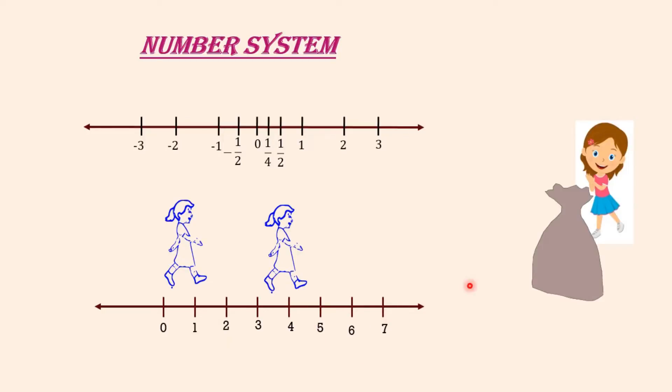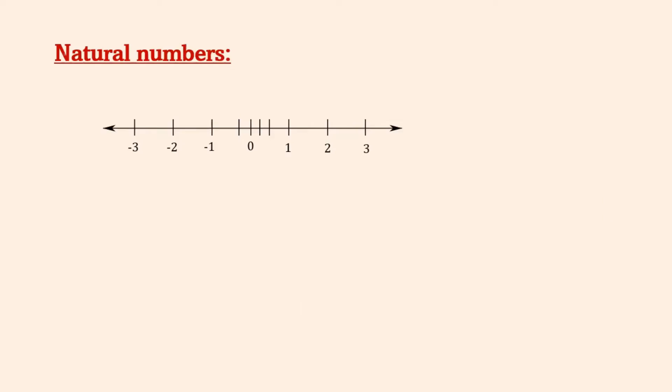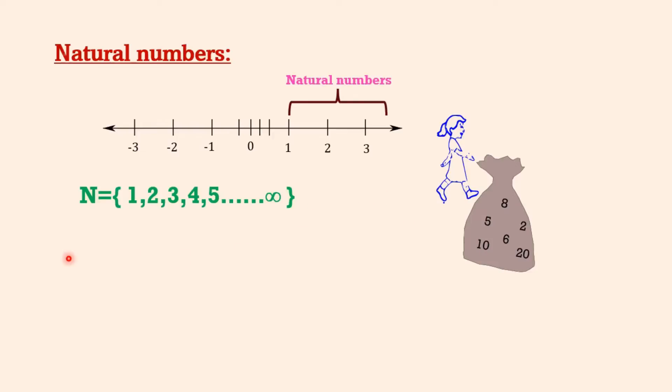Now suppose Veena starts walking along the number line and collecting some of the numbers. Get a bag ready to store them. She might begin with picking up only natural numbers like 1, 2, 3, and so on. She knows that this list goes on forever. Now her bag contains infinitely many natural numbers. Recall that we denote this collection of natural numbers by the symbol N.